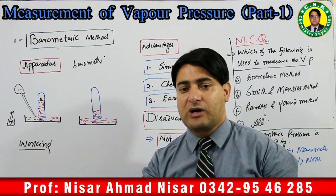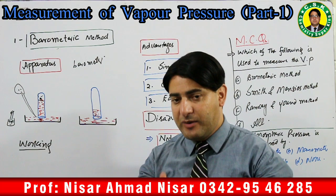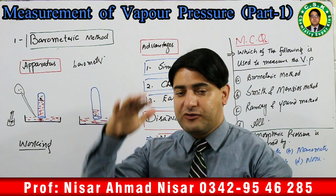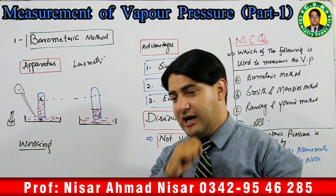Jab yeh drop upar jaayega to yeh drop evaporate hoga. Is evaporation se vapors banenge. Jab woh vapors us liquid drop ke saath equilibrium mein aa jaayenge, us waqt yeh vapors mercury ki surface par downward pressure lagaayenge.